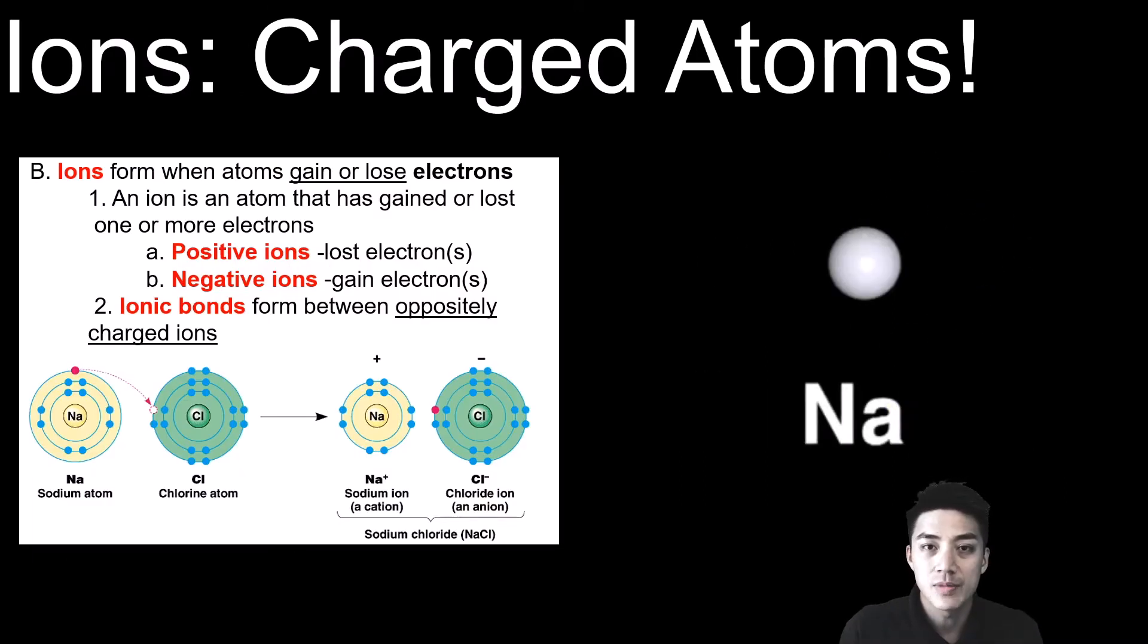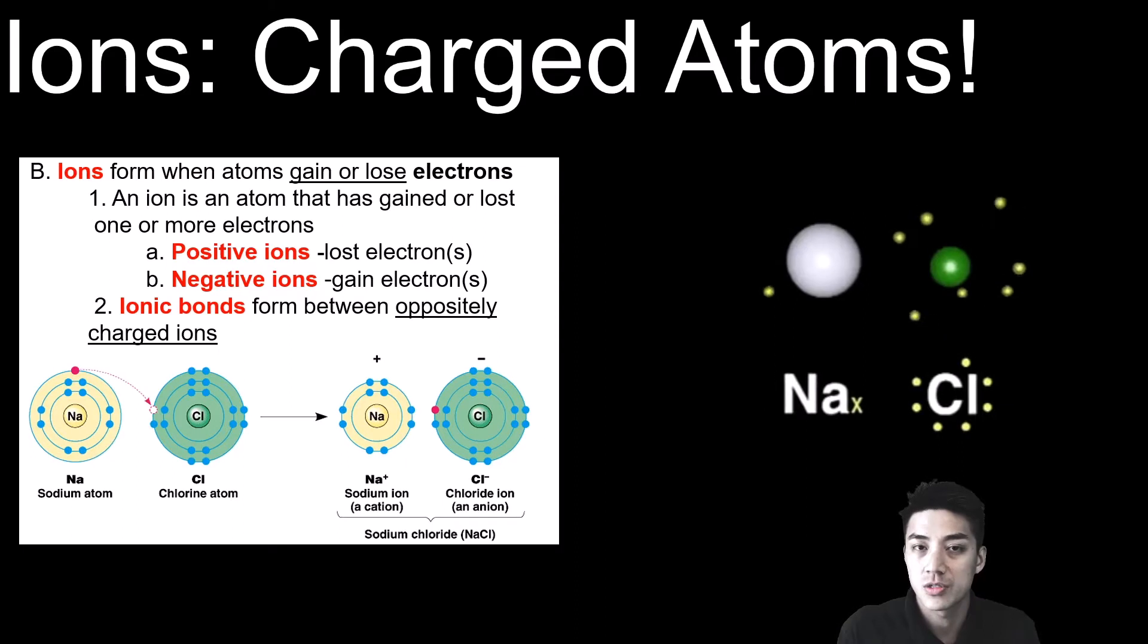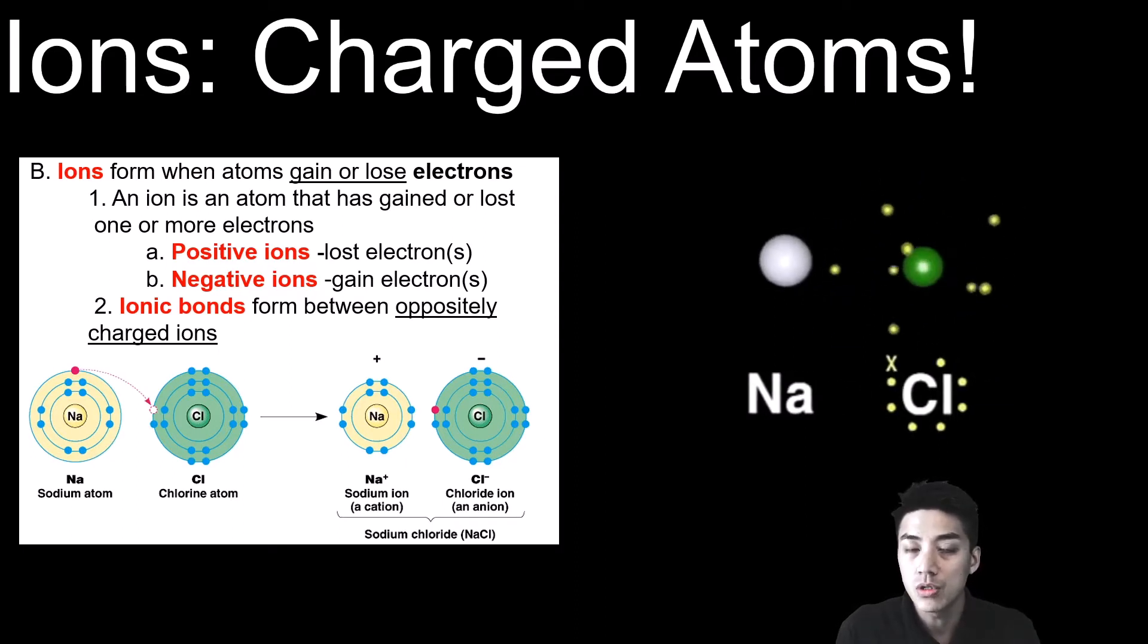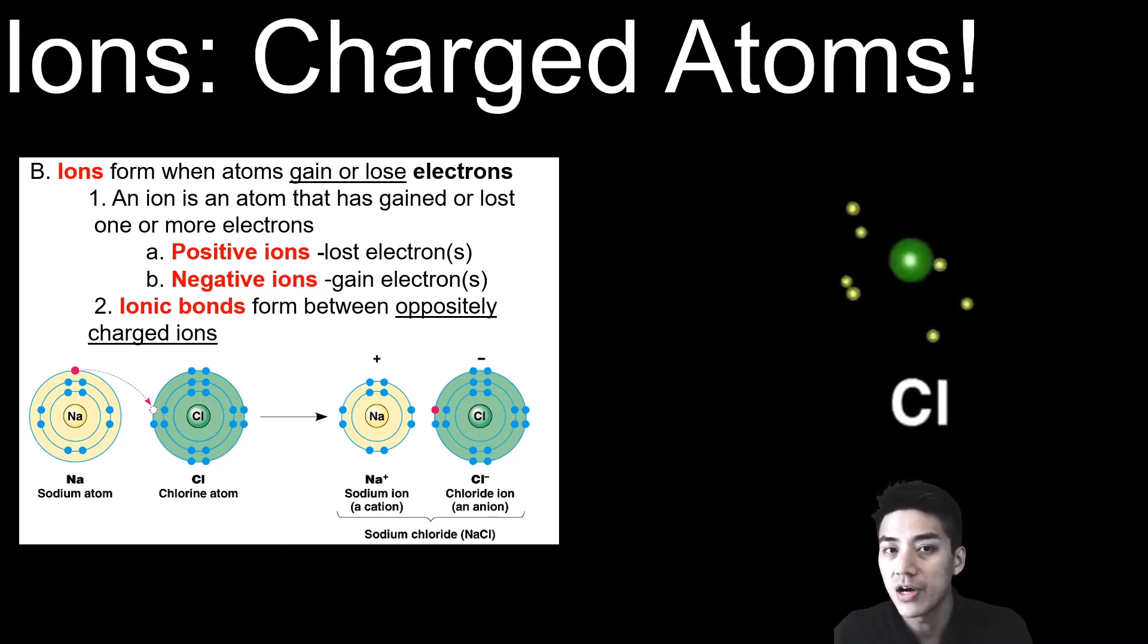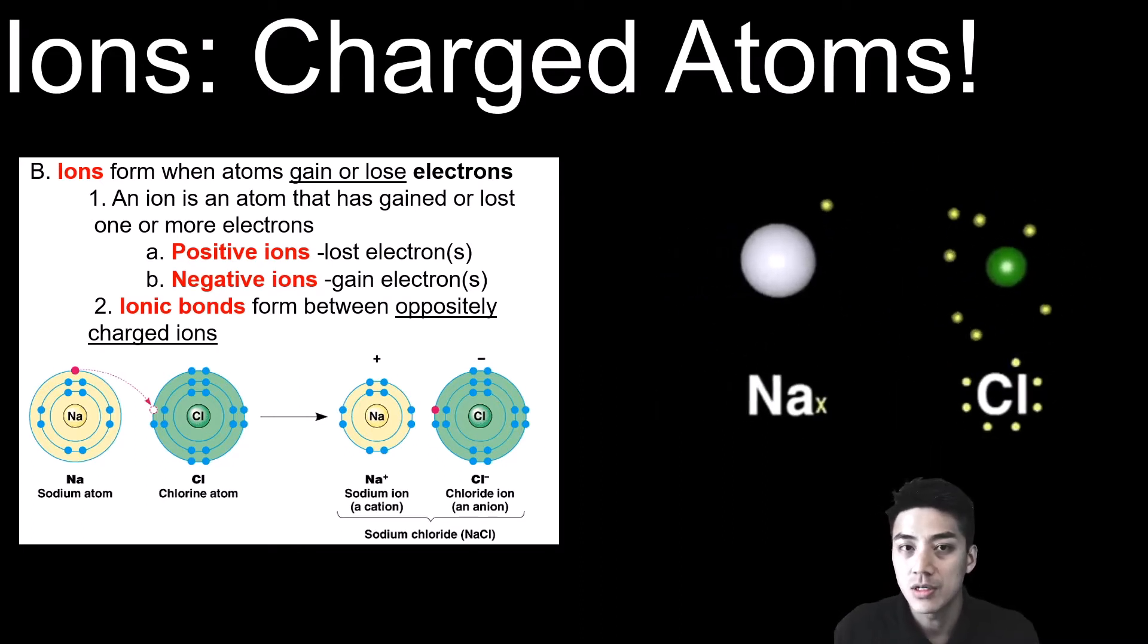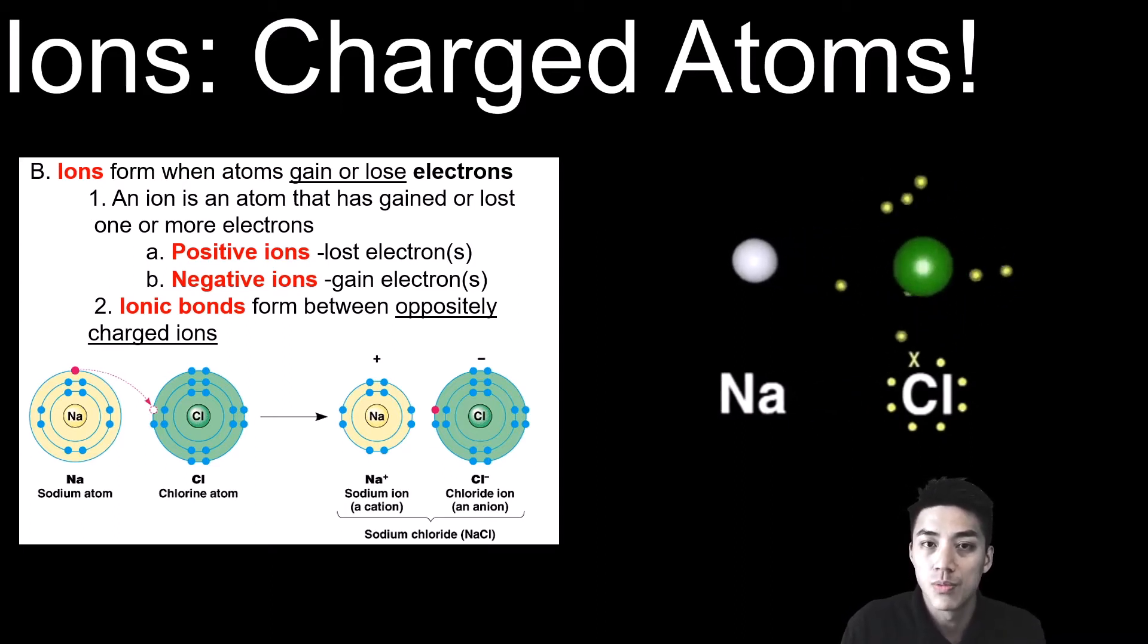Ions form when atoms either gain or lose electrons. Electrons are negatively charged particles which means when you lose electrons overall you become more positive, you become a positive ion. When you gain electrons you're taking on something that's negative, overall your charge becomes more negative.